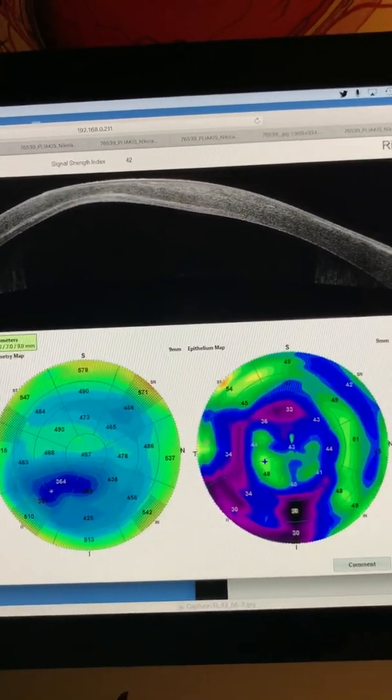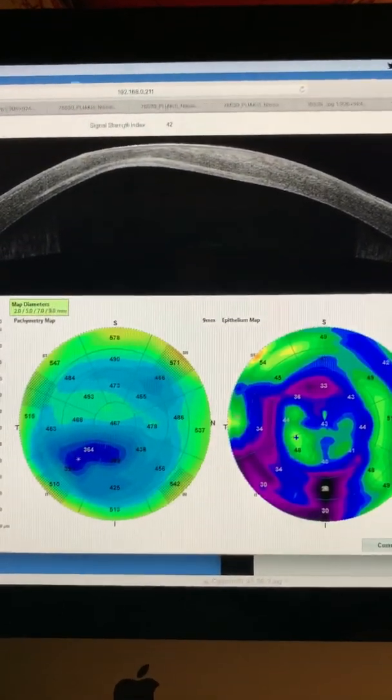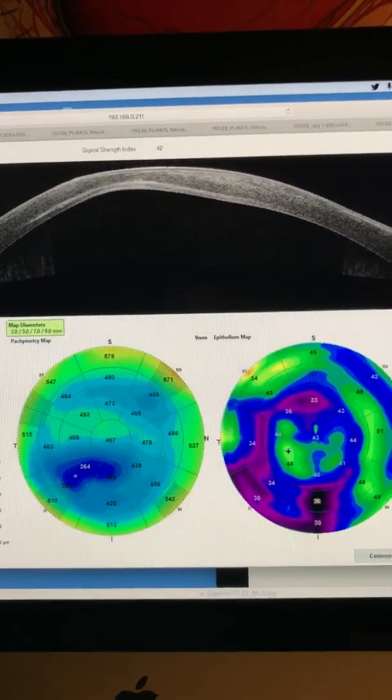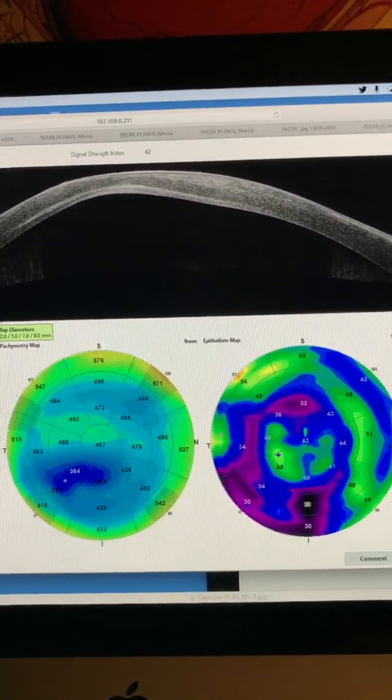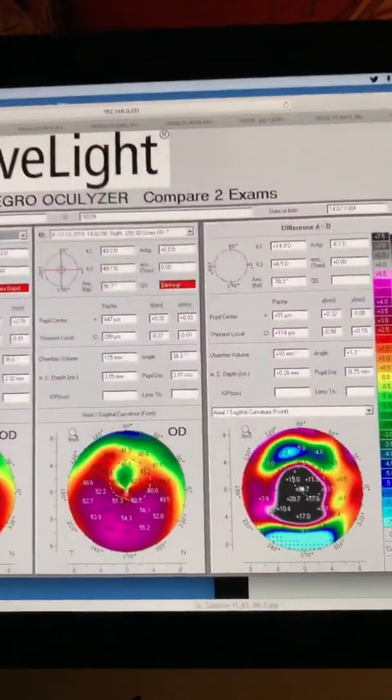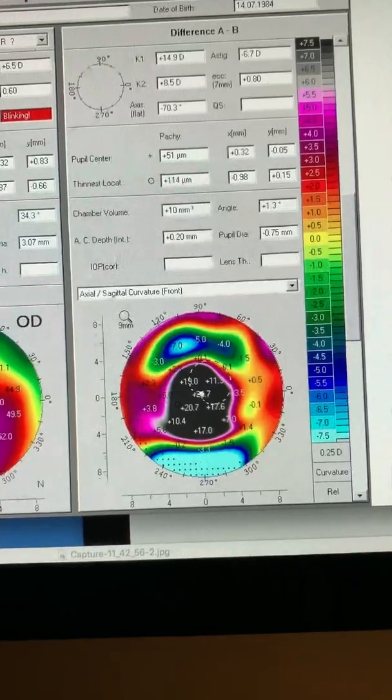This patient with a minus 2 contact lens is functioning in the 20/40 level. And again, a testament, let's see the difference maps on Pentacam, a testament of how this procedure can give dramatic flattening.